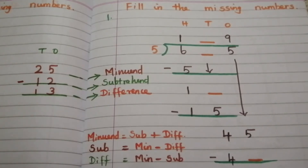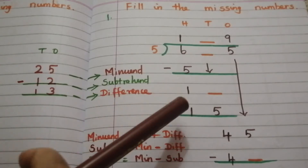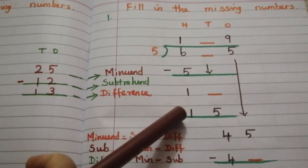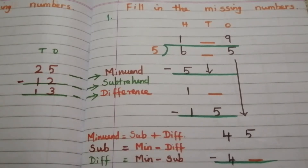We have to apply the same formula to find missing numbers in division problems, because division is nothing but repeated subtraction.